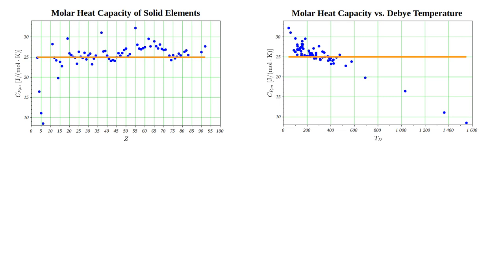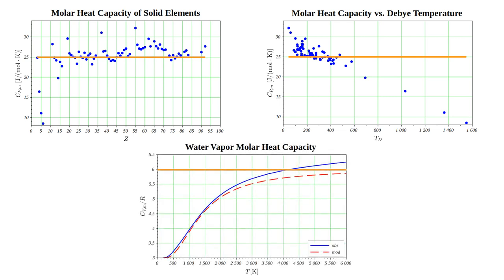Plotting heat capacity versus Debye temperature reveals a strong trend of decreasing heat capacity with increasing Debye temperature. The Debye model explains heat capacities below the classical prediction as due to the freezing out of vibrational degrees of freedom. This same principle allows us to explain why the heat capacity of multi-atomic gas molecules corresponds to different numbers of degrees of freedom at different temperatures.